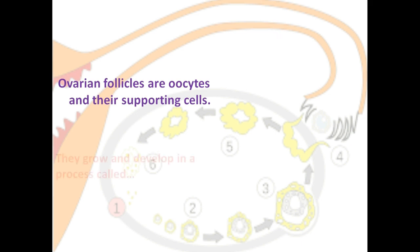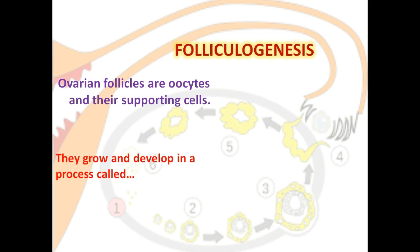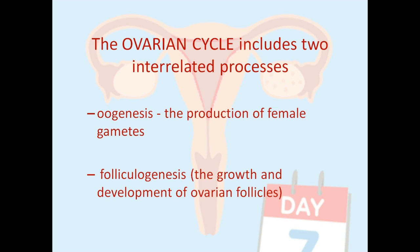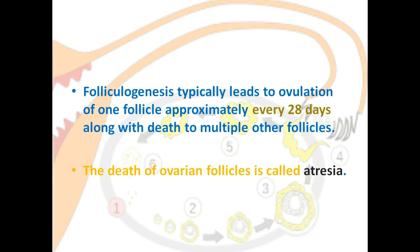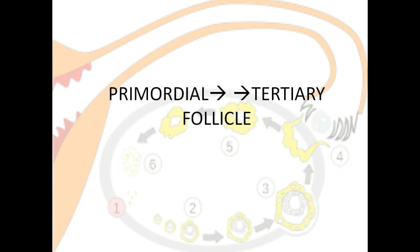Now that we know what oocytes are, let's talk about follicles, which are a combination of oocytes and supporting cells. These follicles grow by a process called folliculogenesis — the second phase of the ovarian cycle. Folliculogenesis typically leads to ovulation of one follicle approximately every 28 days, along with the death of multiple other follicles. Like oocytes, ovarian follicles also die, and this process is called atresia. We are now looking at the journey of a follicle from primordial to tertiary follicle.